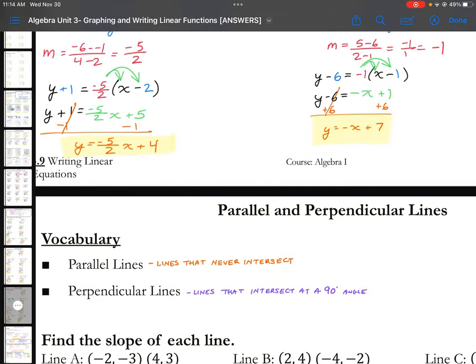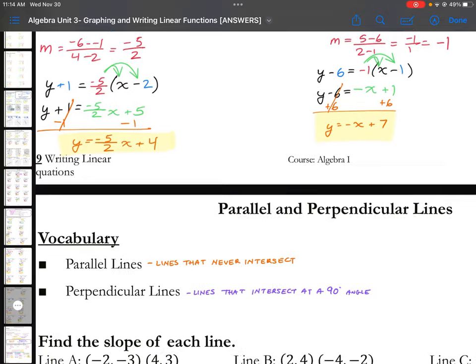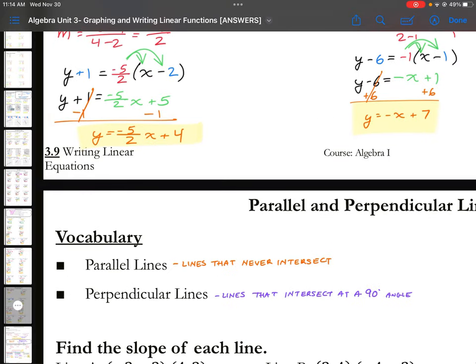Go ahead and turn your packet to page 37, pause the video and copy down the parallel lines and perpendicular lines definition, and then go ahead and find the slope of each line below. Again, pause the video as you calculate it before you see the answers.